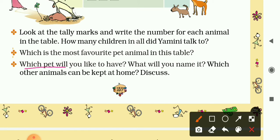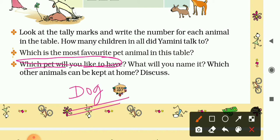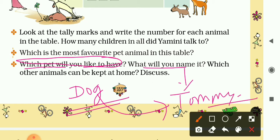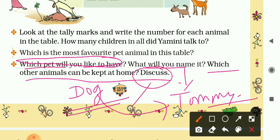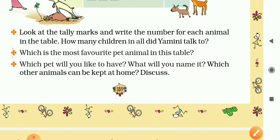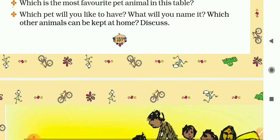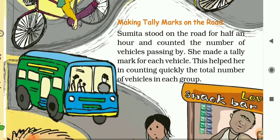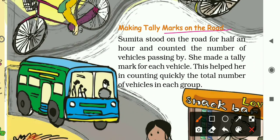Which pet would you like to have? You can answer it yourself — for example, you could say dog or cat. What would you name it? If you have a dog, you could name it Tommy or any other name. Which other animals can be kept at home? Discuss. There are many, like buffalo and sheep — these are also pet animals.